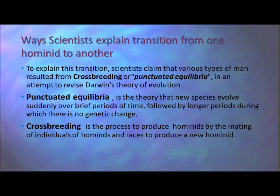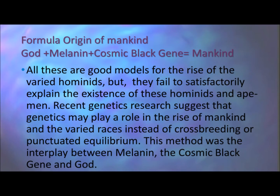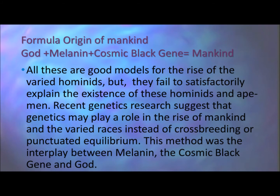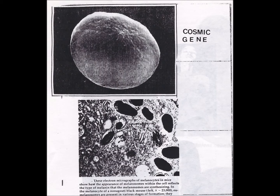Punctuated equilibrium is the theory that new species evolved suddenly over brief periods of time, followed by longer periods during which there is no genetic change. Cross-breeding is the process of producing hominids by the mating of individuals from different hominid types and races to produce a new hominid. All of these are good models, but they fail to satisfactorily explain the existence of these hominids. Recent genetic research suggests that the interplay between melanin — the cosmic black gene — and events in the universe may be a better explanation.